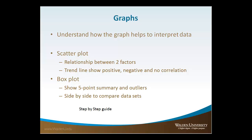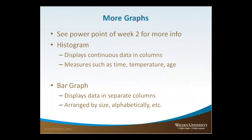Now let's take a look at how graphs can help us understand and interpret the data. Scatter plots are used to look at the relationship between two factors — you can see trend lines showing positive, negative, or no correlations. Box plots are helpful for identifying outliers and comparing different data sets. There's more information in the week two PowerPoint on graphs. Histograms are used for displaying continuous data in columns, and bar graphs display data in separate columns and can be used for continuous as well as discrete data sets.